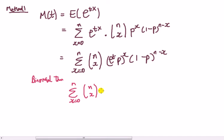Anything that looks like this, anything that looks like this: sum of n choose x, y to the x, z to the n minus x.